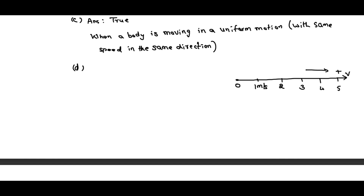Whenever a body has acceleration in the direction of velocity, then the body is speeding up — in this case it can be true. But suppose the body is changing its direction, and it is traveling. Then we can take five as minus five, four as minus four, three as minus three, two as minus two, and minus one. In this case, what will happen to acceleration if I am taking any two points?